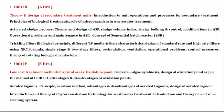In Unit 3, students study introduction to unit operations and processes for secondary treatment, principles of biological treatment, and role of microorganisms in wastewater treatment. In detail: activated sludge process — theory and design, sludge volume index, sludge bulking, control of sludge, modifications in ASP, operation problems and maintenance in ASP, and the concept of sequential batch reactor. Also in the same unit, trickling filter — biological principles, different trickling filter media and their characteristics, design standards for high-rate trickling filter using the NRC formula, single-stage and two-stage filters, recirculation, ventilation, operation problems, control measures, and theory of rotating biological contactor.